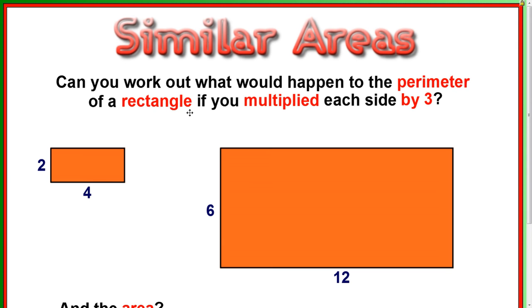Firstly, let's look at this example. Can you work out what would happen to the perimeter of a rectangle if you multiplied each side by 3? So we've got a rectangle here, side length 2 and 4, and the other rectangle here, side length 6 and 12. You can see that the corresponding sides have been multiplied by 3. 2 times 3 is 6, and 4 times 3 is 12.